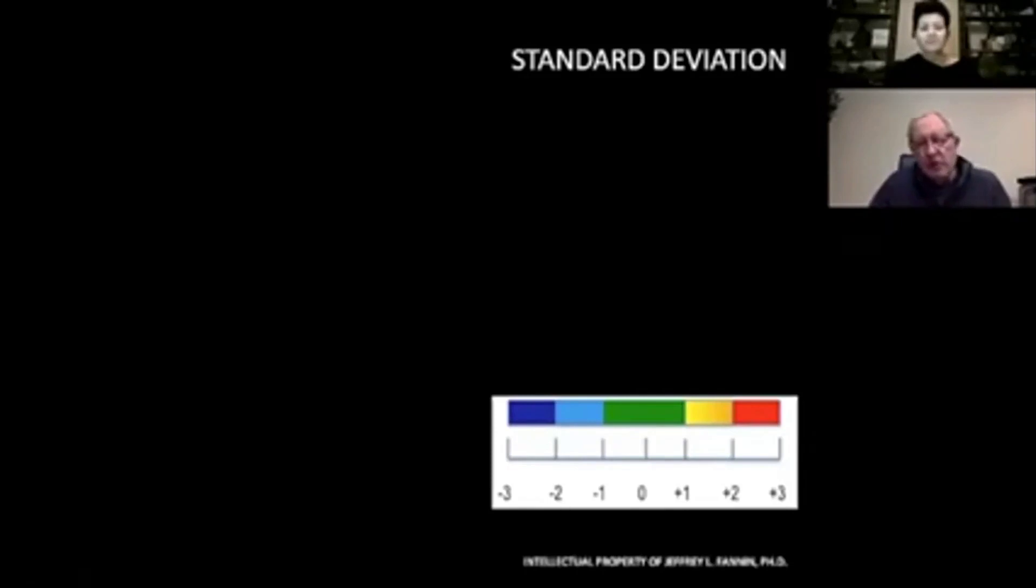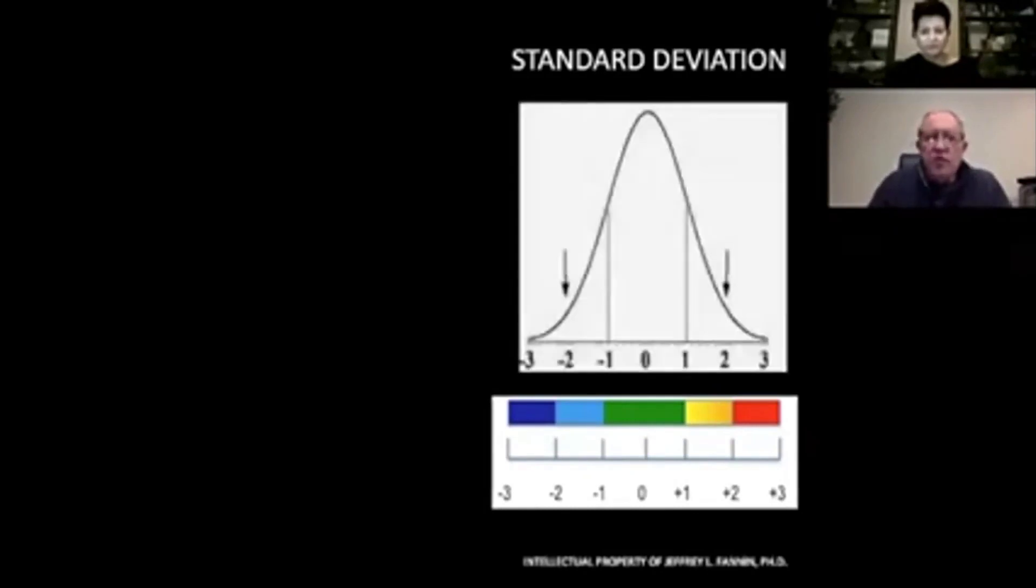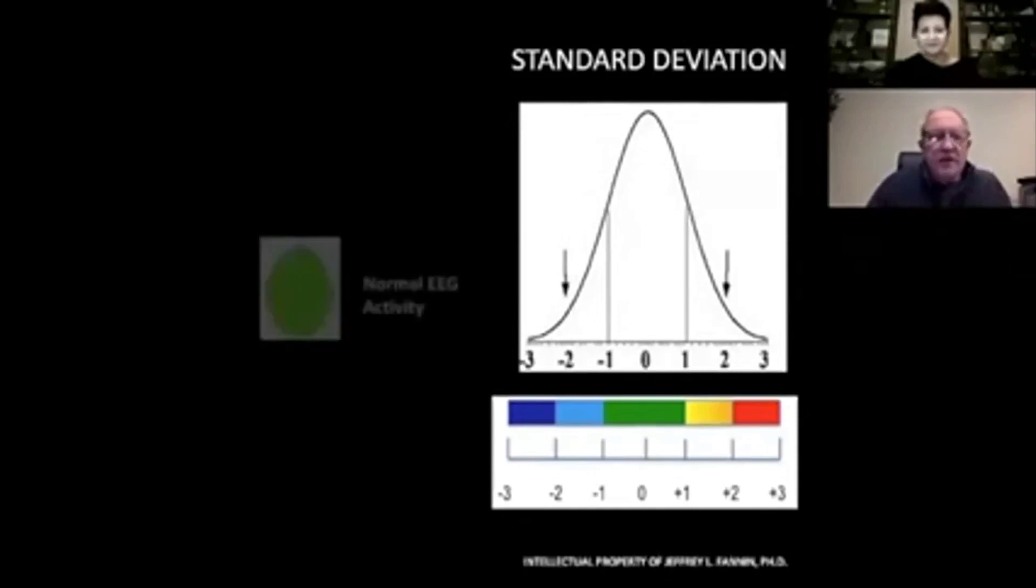There's over 4,000 to 5,000 people in the normative database, and we can look at that by using what's called a Gaussian distribution or a bell curve. We can see where the standard deviations are. That's kind of a mathematical thing.